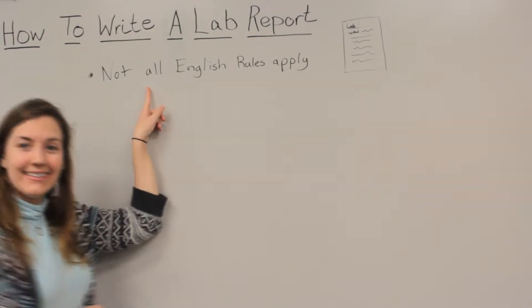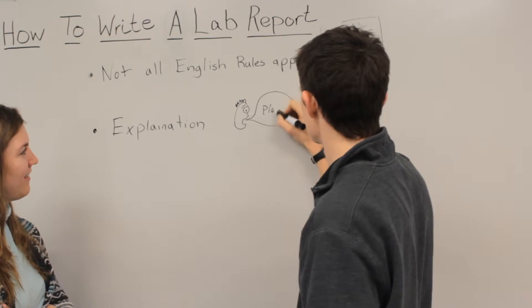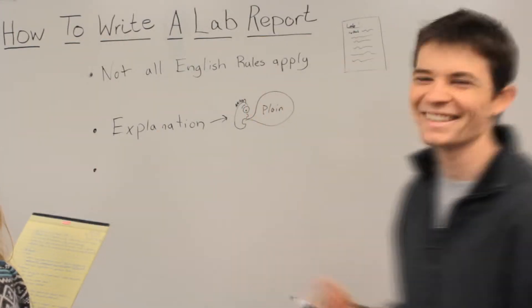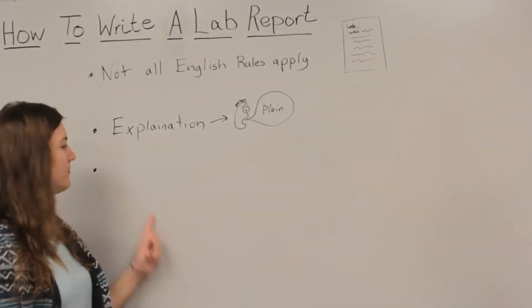Find the template, the rubric, or the sample the instructor provides, and follow it. Not all English rules apply in scientific writing. This is writing for explanation, using plain language, and targets a general audience.